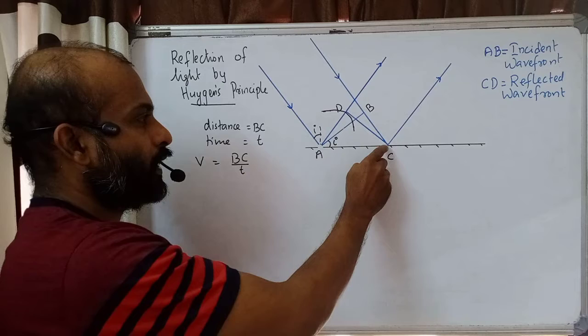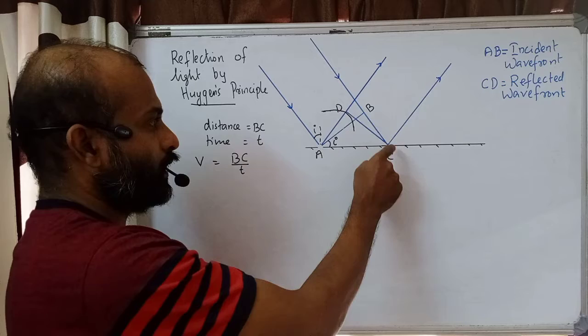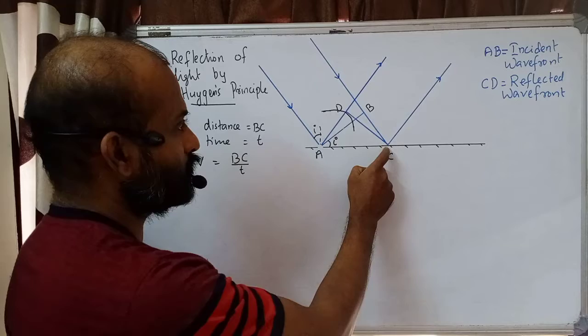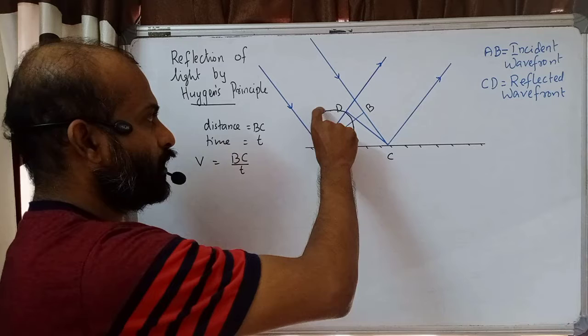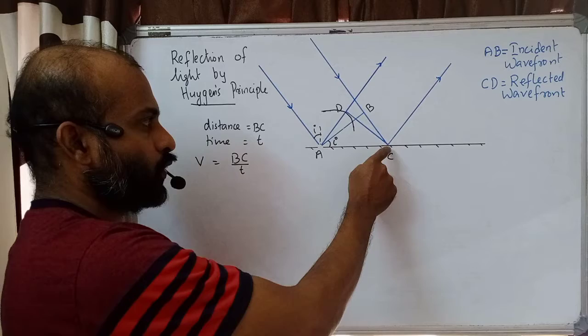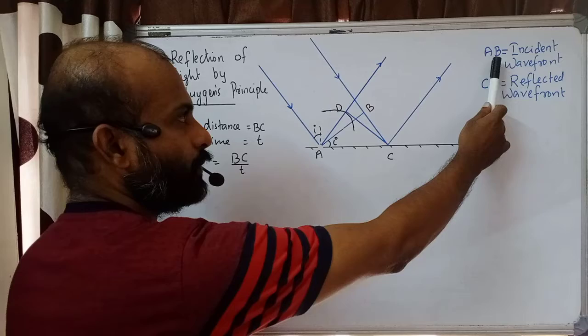I have drawn a part of that sphere — you can see an arc. From the arc, draw a tangent to the sphere; the tangent touches at a point and we can see the tangent gives line DC. So CD will be the reflected wavefront. We have taken the length BC, drawn a sphere from point A, and the envelope — the tangent from C to D — gives CD as the reflected wavefront.